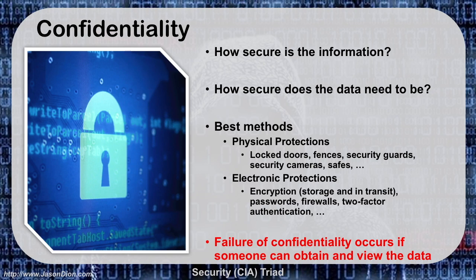When I talk about physical protections, that would be like locked doors, fences, security guards, security cameras, and safes. If I have my social security card in my house, it's locked up in a safe so no one can steal it. If I had a digitized version, I might have that electronic file encrypted and stored in a cloud service like Dropbox. It all depends on what that information is and how secure it needs to be. My bank account information needs to be very secure; my public-facing website does not.